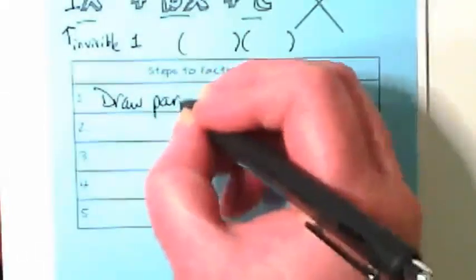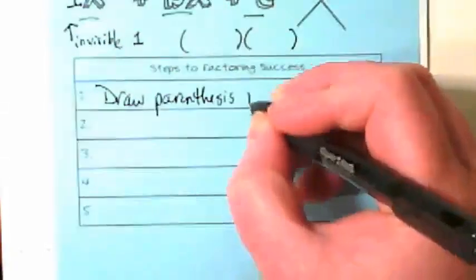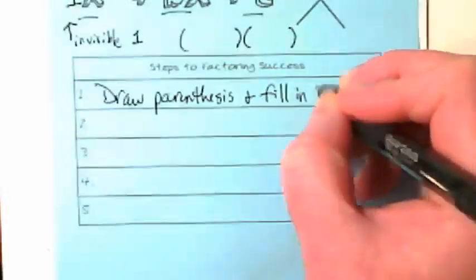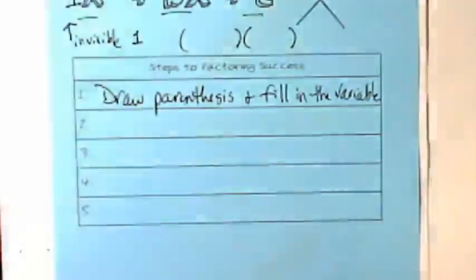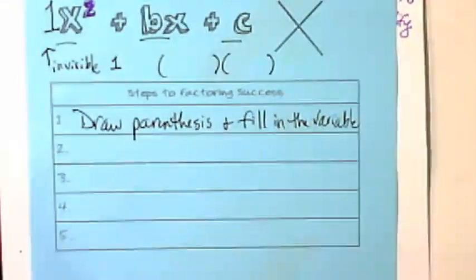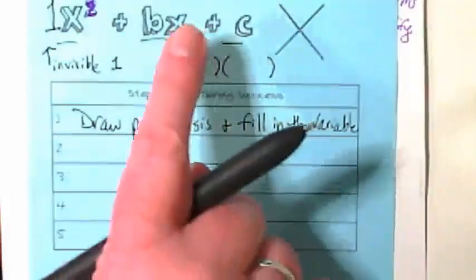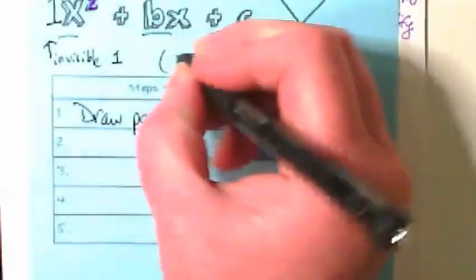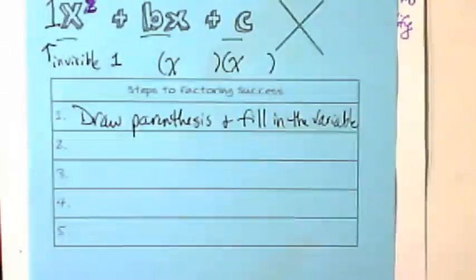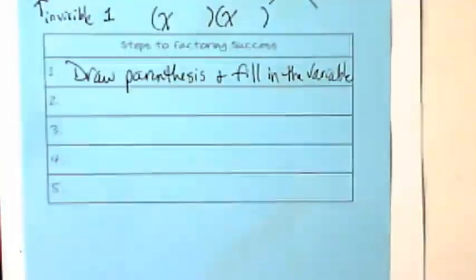So, our step one is draw the parentheses and fill in the variable. Our variable is x. We've got x squared here and a constant times x, so it'll be x here. So we're going to put an x here and an x here. I'm sorry for those of you who don't write tiny. This is a lot to fit into the step two space. One of these days, I will undo this PDF and make this box bigger.